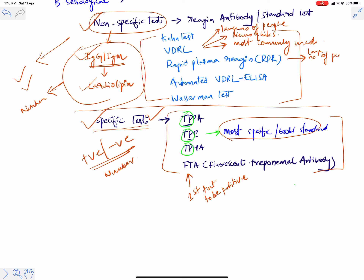RPR is the test of choice for rapid serological diagnosis in the clinical office setting. Specific tests are used for confirmation — they confirm the specificity of the disease.